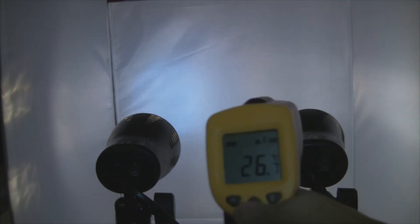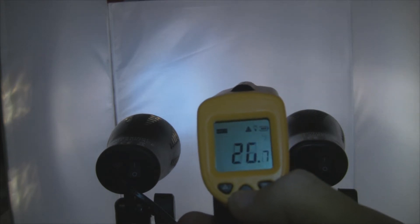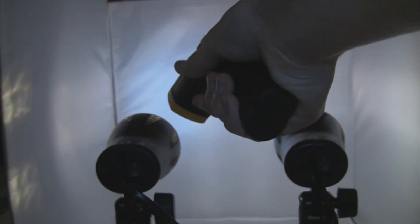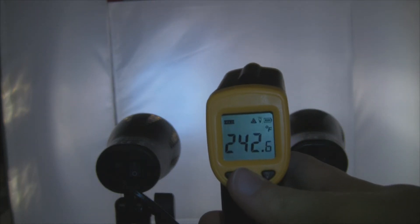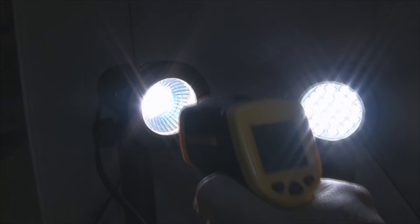So the LED light, coming off about 26.7 degrees Celsius or 80 degrees Fahrenheit. So a little bit off, compared to the halogen bulb, which is 117 degrees Celsius or 242 degrees Fahrenheit.